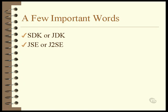SE stands for Standard Edition, the J stands for Java, and the J2 stands for Java 2. These two terms are, in fact, used to stand for the SDK and the JDK. These acronyms are not used as often as the first two, but they do come into play during installation.